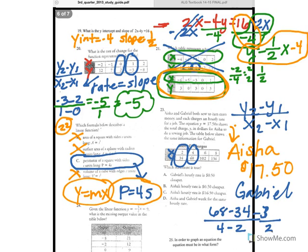So you get 34. So 34 over 2 and that gives you 17. So now we're comparing these two rates. Gabriel's rate is 17 and Aisha's rate is 1750.